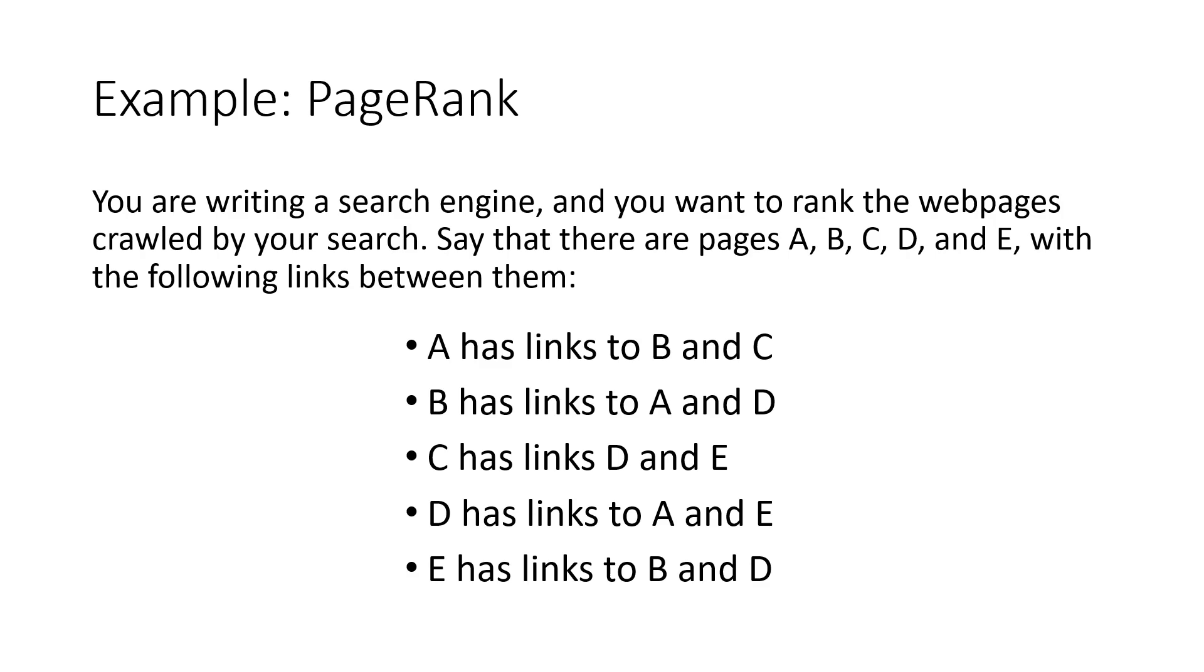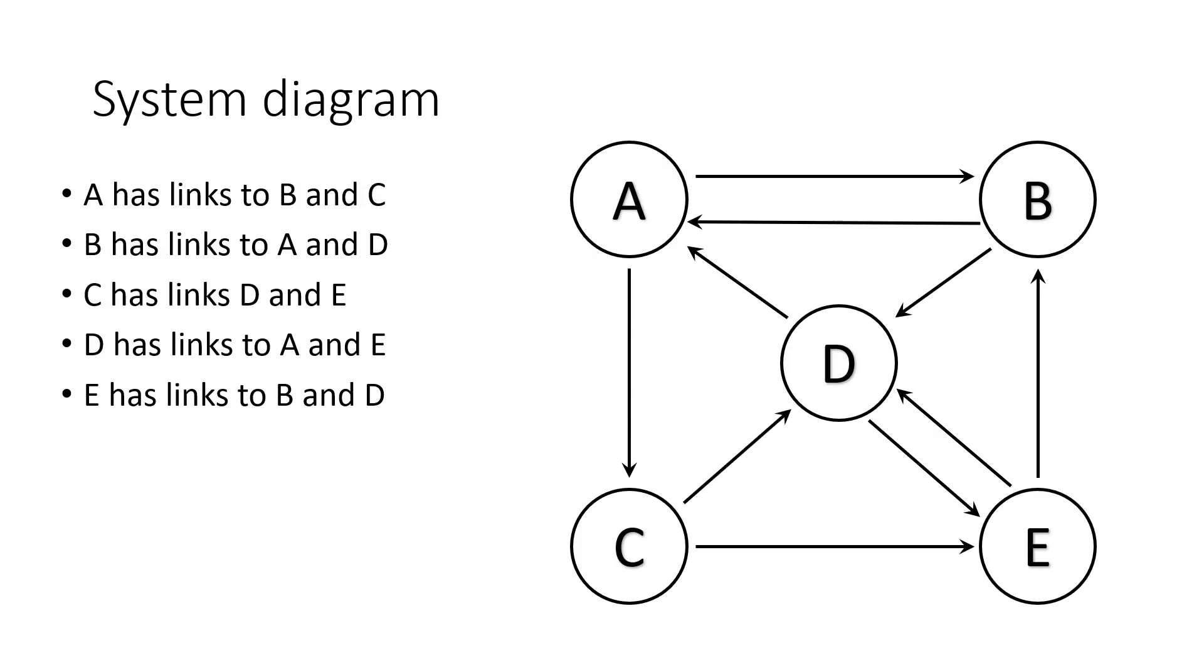In the example we have page A with links to B and C, B with links to A and D, C with links to D and E, D with links to A and E, and E with links to B and D. This is kind of hard to visualize, so we'll make a diagram. Here's the diagram.